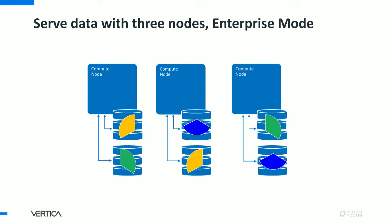We also care about availability. If a node goes down — say the second node — we can still query our data through nodes one and three because of buddy projections. Each node's neighbor contains a copy of the data from the node next to it, so node one shares its segment with node two, node three can cover node two, and node one covers node three. We may also store data in different copies sorted for different kinds of queries — we call these projections in Vertica.